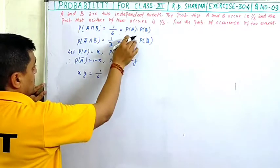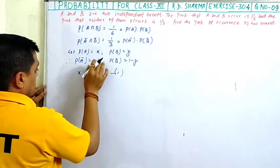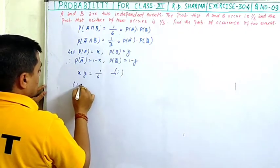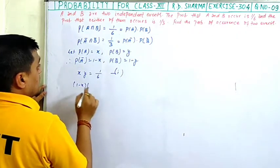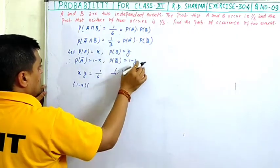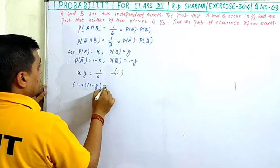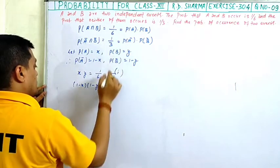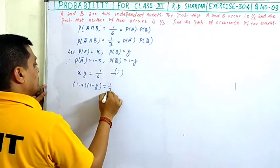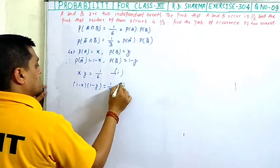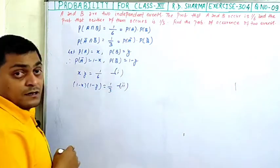Then probability of A' into probability of B' equals 1 minus x into 1 minus y, which equals 1 upon 3. Let this be equation number 2.